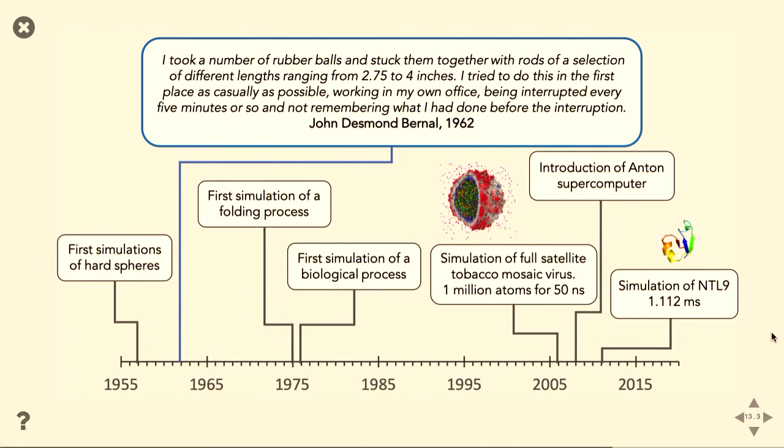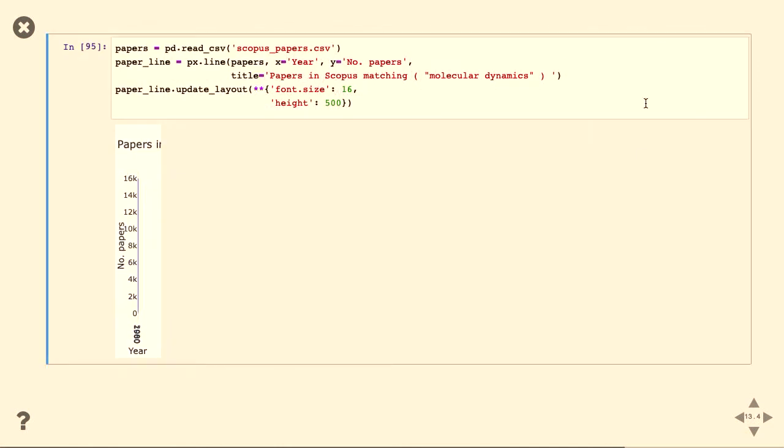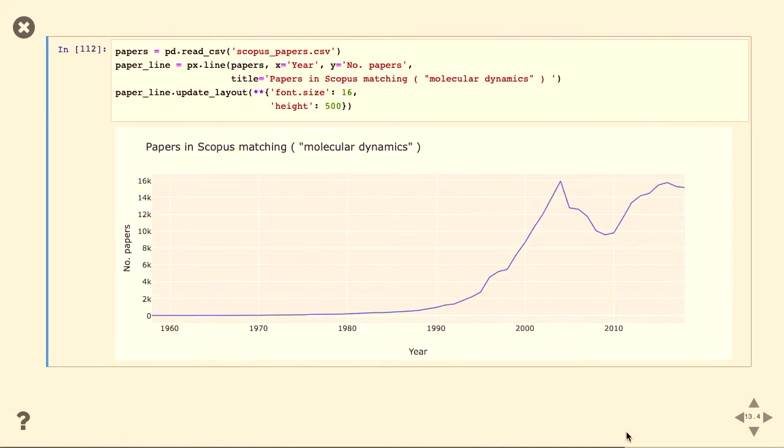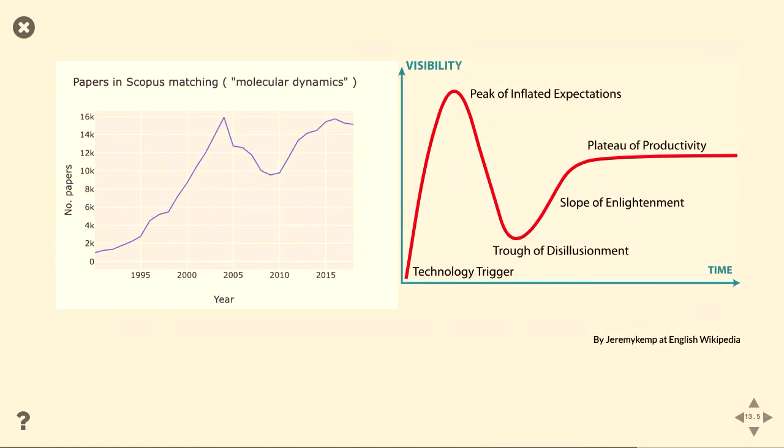By 1975, we'd started simulating biological things, and you can see how quickly this thing has grown, because by 2006, we started simulating a full virus capsid, which is a million atoms, and for 50 nanoseconds. And when we get this new supercomputer that was built specially for this field, then we start seeing much longer timescale simulations. And you can also see this if you look at the number of publications in Scopus Matching Molecular Dynamics, which, interestingly, so it starts off at roughly zero, and then peaks that are around 16,000.